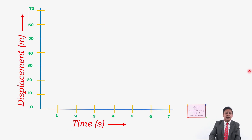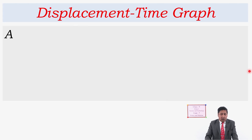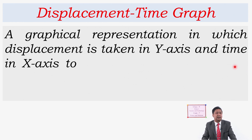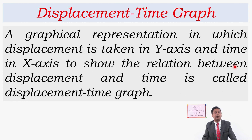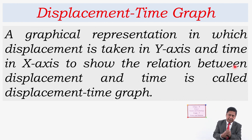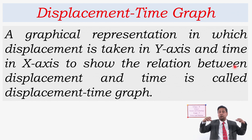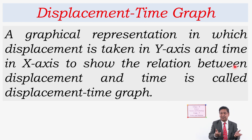A graphical representation in which displacement is taken on the y-axis and time is taken on the x-axis, to show the relation between displacement and time, is called a displacement-time graph. If displacement is on the y-axis and time is on the x-axis to represent the relationship between these two, then this graphical representation is called a displacement-time graph.